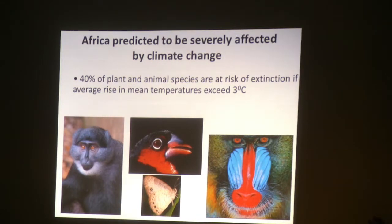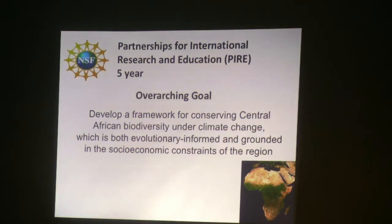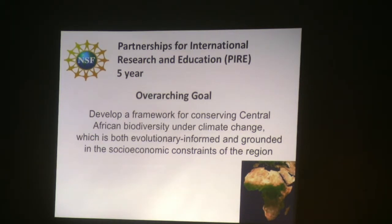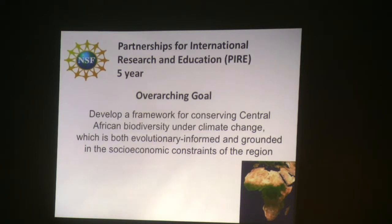Africa is predicted to be severely affected by climate change — probably 40% of plants and animals are at risk of extinction if mean temperature exceeds three degrees, and we're already at two degrees in many parts of Africa. With all of this going on, colleagues and I developed a PIER grant — Partnerships for International Research and Education — with the goal of developing a framework for conserving Central African biodiversity under climate change that was both evolutionarily informed and grounded in the socioeconomics of the region. This was a large five-year grant with 40 scientists from four continents and 25 universities and research institutions.